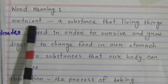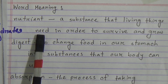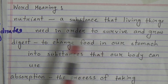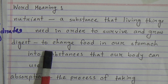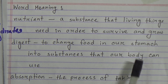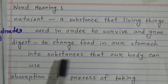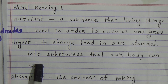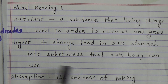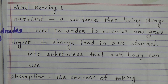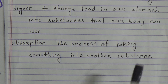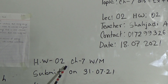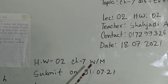Now come to word meanings. Nutrient: a substance that living things need in order to survive and grow. Digest: to change food in our stomach into a substance that our body can use. Absorption: the process of taking something into another substance. Today's homework number is two, and the topic is word meaning. You have to submit this homework by 31-7-21.